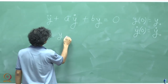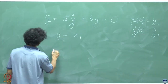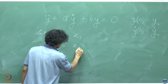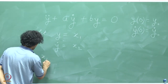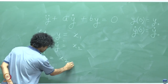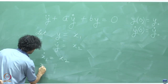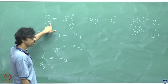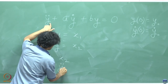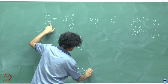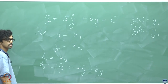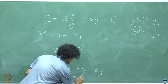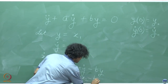Let y equal x1 and y dot equal x2. Then x1 dot is x2, and x2 dot is y double dot, which equals minus a y dot minus b y. In terms of x1 and x2, this is minus a x2 minus b x1.